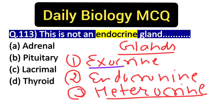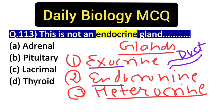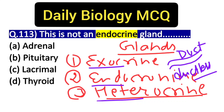Exocrine glands have a pipe-like structure called ducts, and through these ducts their secretions reach the target organ. Endocrine glands have no ducts, so they are called ductless glands. Heterocrine glands have ducts and also act as endocrine glands.